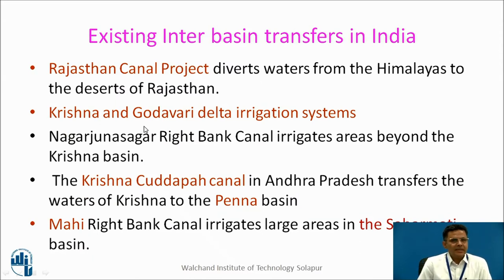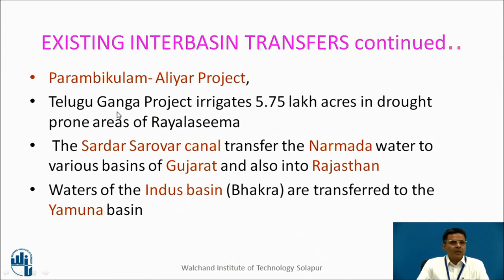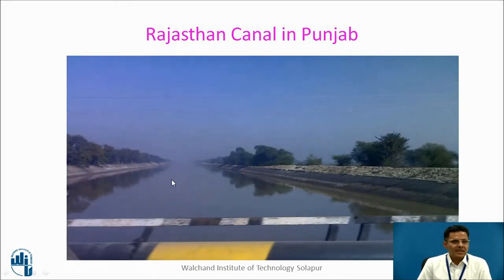Interbasin transfers are not new — we have examples presently also. The Rajasthan Canal project, Krishna-Godavari Delta Irrigation System, Krishna-Kadappa Canal, and Mahi Right Bank Canal irrigating large areas in the Sabarmati Basin are existing interbasin transfers in India. The Parambikulam-Aliyar project, Telugu Ganga project, Sardar Sarovar Canal going into Gujarat as well as Rajasthan, and waters of the Indus Basin transferred to the Yamuna Basin — all these are examples of interbasin transfer of water. This is the Rajasthan Canal in Punjab.